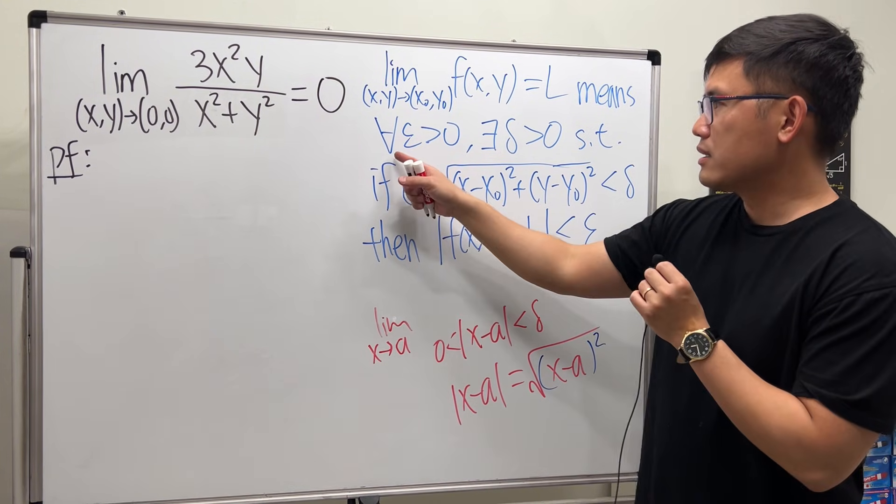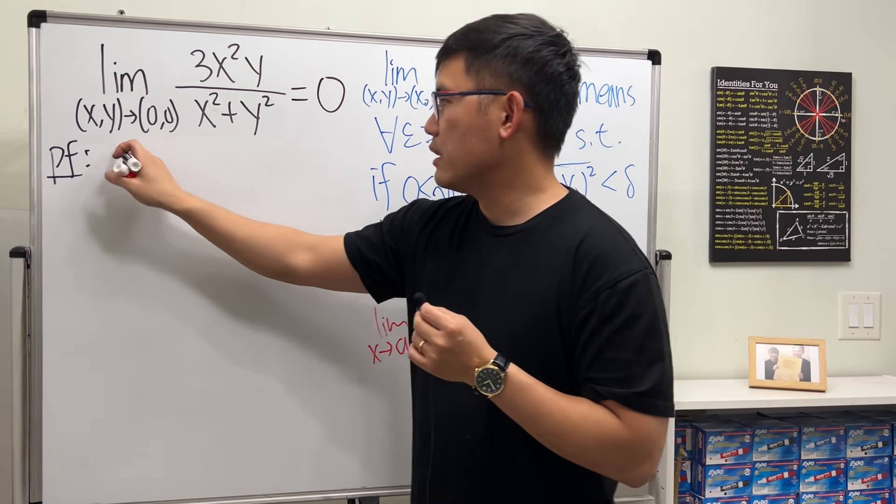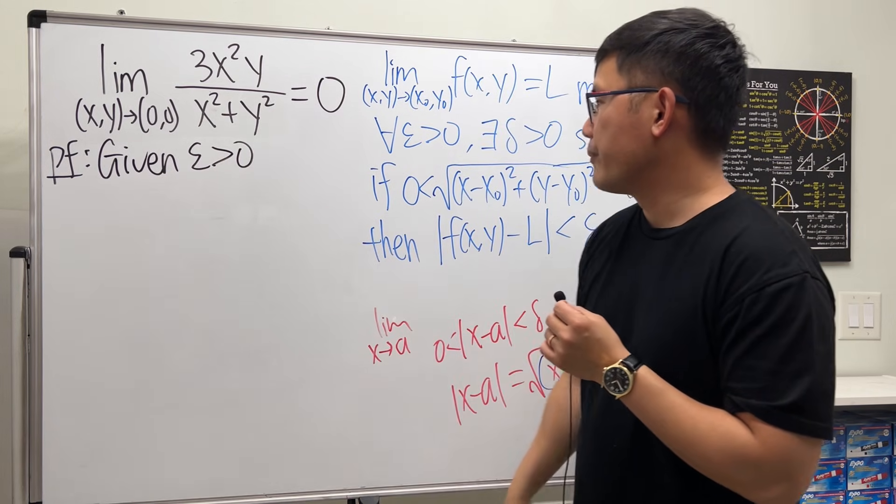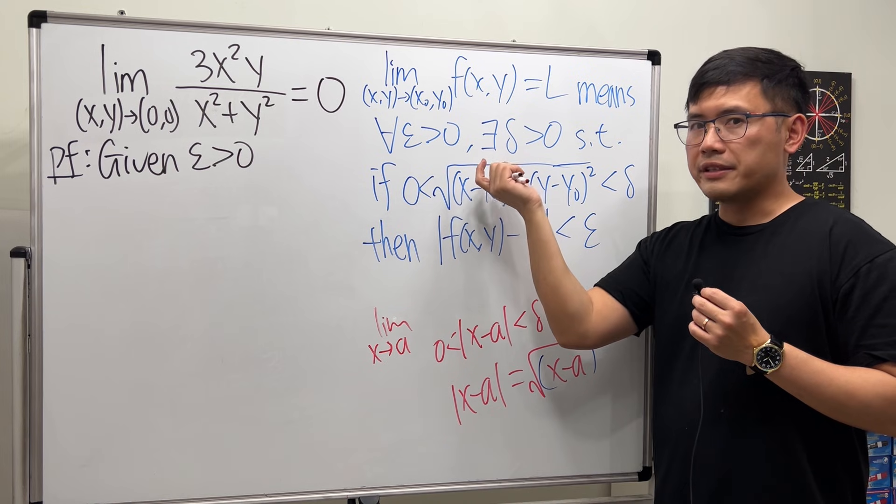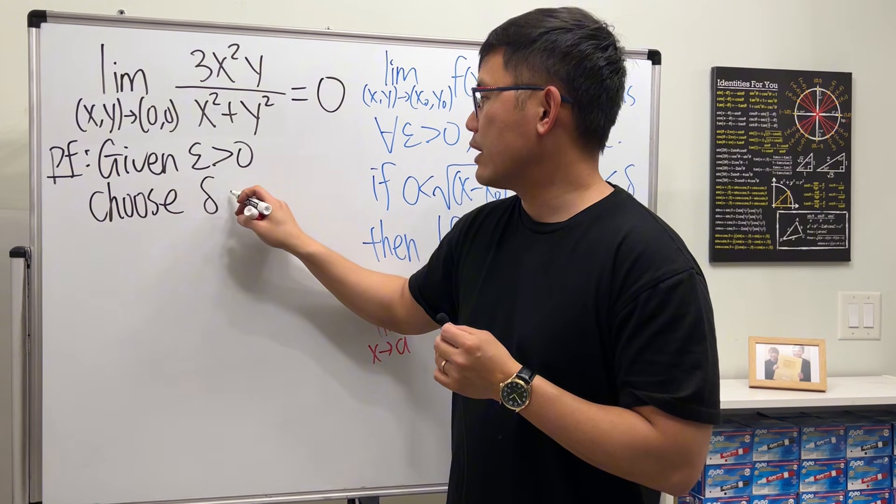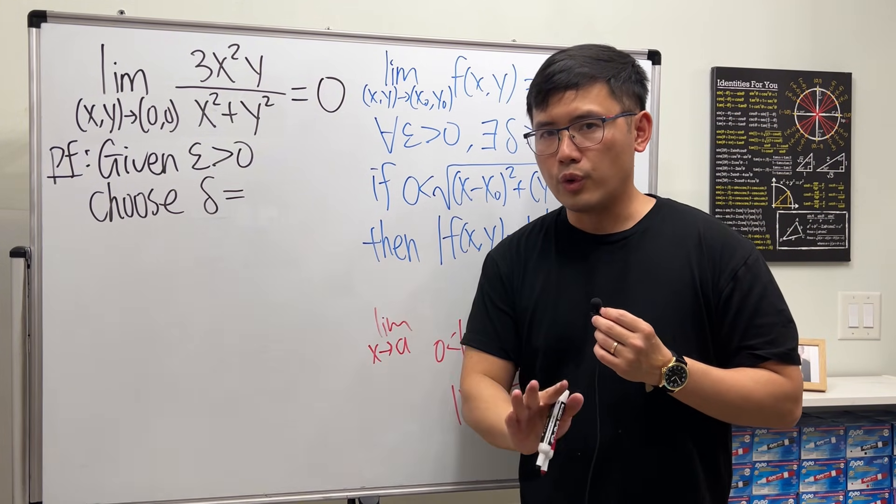All right, let's look at the definition. Right here, we have for all. So I'll just say, given, given epsilon greater than zero. Next, there exists. If the definition says there exists, we have to choose it. So we have to specifically say, choose delta to be something. But right here, we don't know what it is yet. Don't worry.